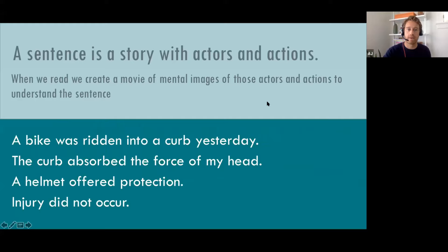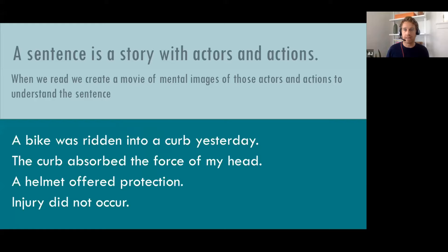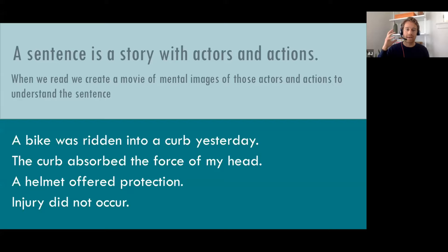A sentence is a story with actors and actions. When we read, we create a movie of mental images of those actors and actions. Let's look at this bad example: 'A bike was ridden into a curb yesterday. The curb absorbed the force of my head. A helmet offered protection. Injury did not occur.' Maybe after reading this you're going — yeah, this is clunky. You had to reread or work a little bit. As you're reading, you're trying to form mental images, but the lack of clarity is getting in the way of your brain creating that movie.